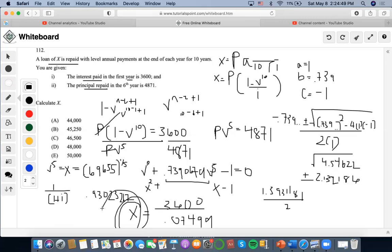So I'll do 3600 divided by 0.07499, I'm going to get 48,006. So that would mean that the answer is D. Thanks for watching.